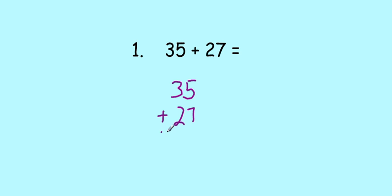Number one, we're looking at 35 plus 27 equals. We have to figure out what rule we're going to apply here. This is the same sign sum rule — 35 plus 27, just like we've always done, because it's just two positive numbers. 5 plus 7 is 12, carry the 1. 1 and 3 make 4, and 2 is 62. So our answer is 62.